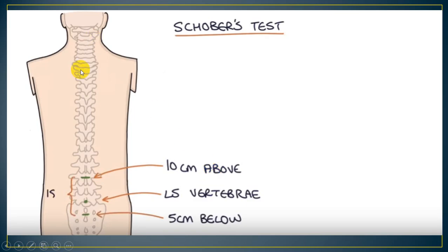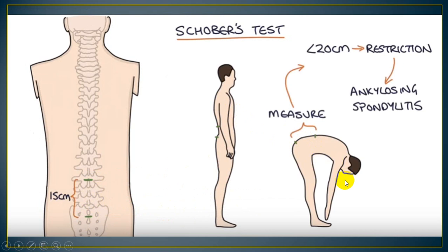What is the Schober's test? We mark the L5 spine and draw two lines: one 5 cm below it and another 10 cm above it. We then ask the patient to lean forward as much as possible and re-measure the distance between the two lines. Normally there should be more than 5 cm of expansion, so the total should exceed 20 cm. If after this maneuver the total expansion measures less than 20 cm, the patient has restricted bending, suggesting ankylosing spondylitis.